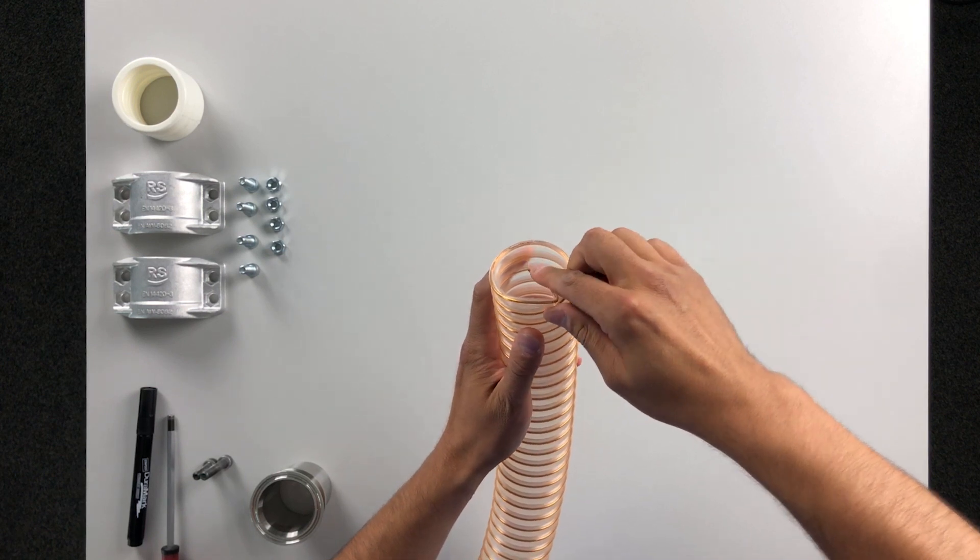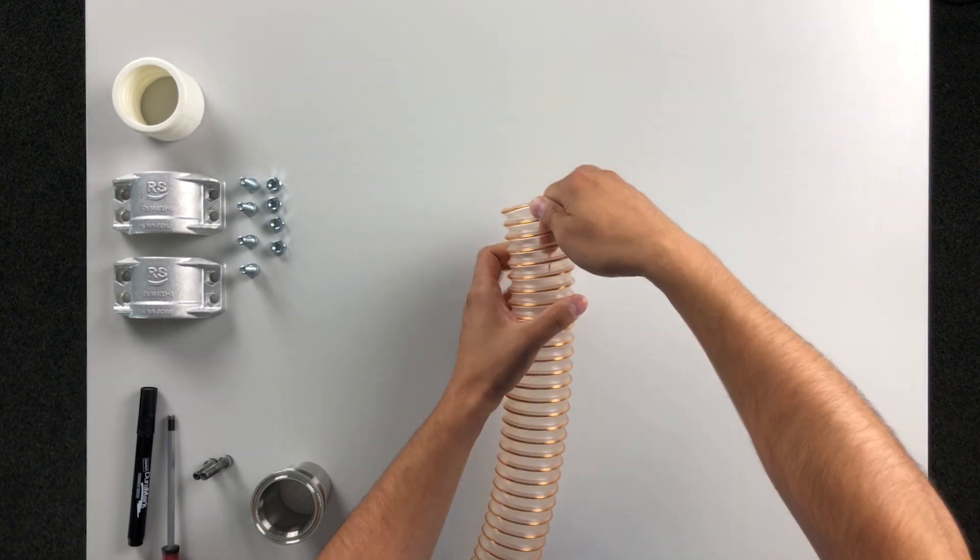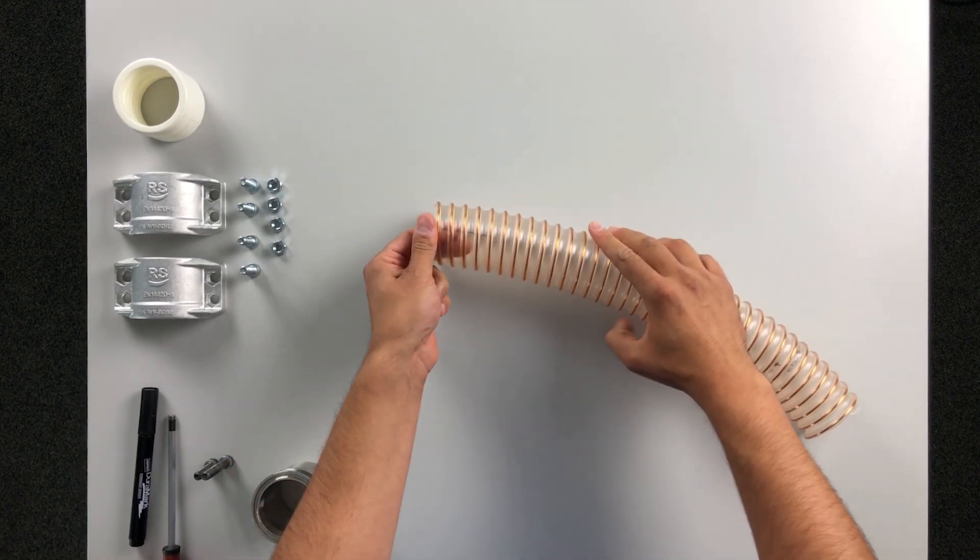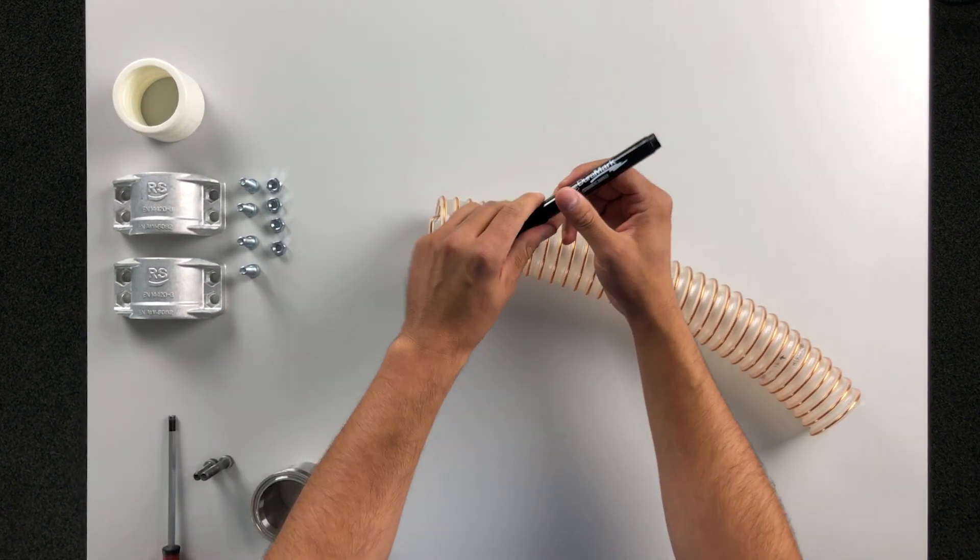Now we bend the exposed wire into the hose at a 90 degree angle and mark the position of the wire on the hose.